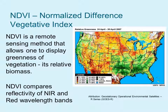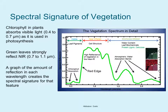NDVI compares reflectivity of near infrared and red wavelengths. Chlorophyll in plants absorbs visible light from about 0.4 to 0.7 microns. Green leaves strongly reflect near infrared between about 0.7 to 1.1 microns. A graph of the amount of reflection in each wavelength creates a spectral signature for that particular feature. Let's take a look at the spectral signature of vegetation.